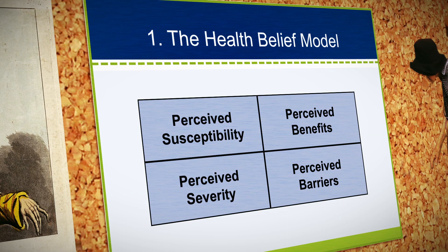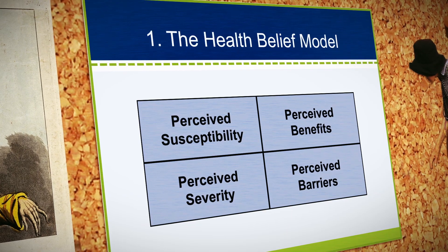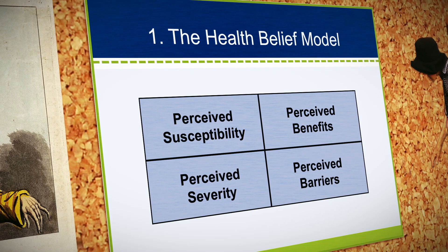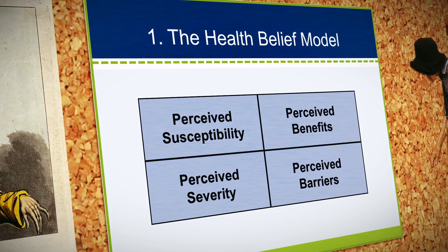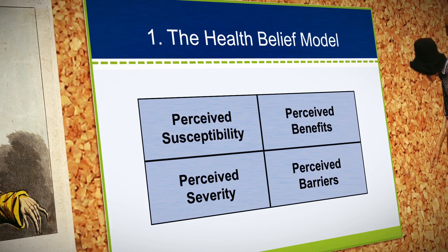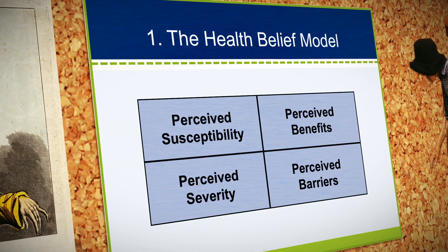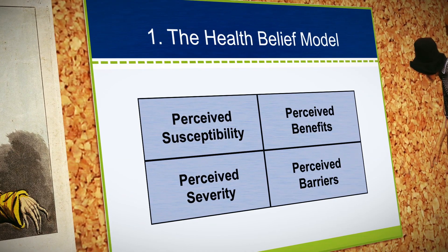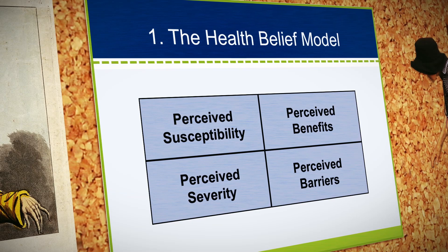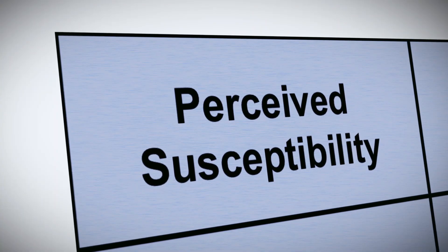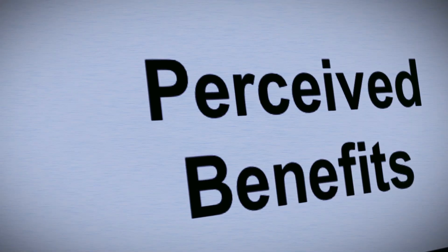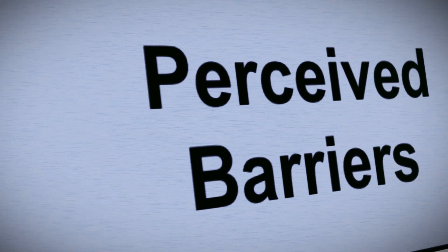Let's take a look at one of the earliest theories of health behavior: the health belief model. This model has a lot of appeal because it's logical, simple, and it provides very useful insights into behavior and behavior change. There are four key constructs in the health belief model: perceived susceptibility, perceived severity, perceived benefits, and perceived barriers.